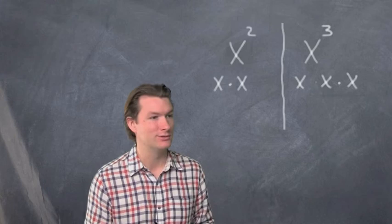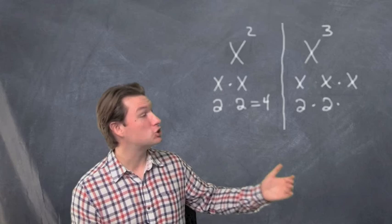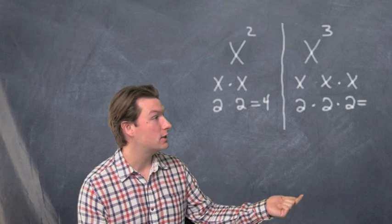So let's say that x equaled 2. 2 squared would be 2 times 2, that's 4. But 2 to the third would be 2 times 2 times 2. That's going to be a different number. 2 times 2 is 4 and 4 times 2 is 8.